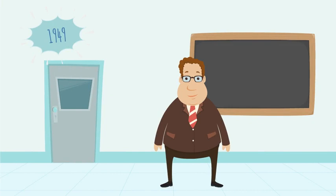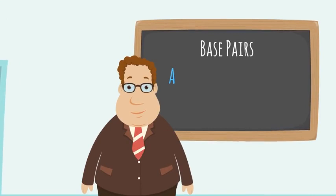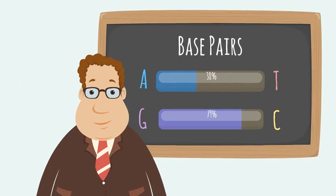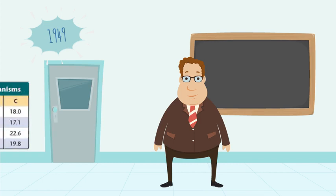In 1949, Erwin Chargaff discovered several properties of DNA, called Chargaff's Rules. The first rule was that in DNA, the amount of base pairs match up. That is, the number of adenine units equals the number of thymine units, and the number of guanine units equals the number of cytosine units. This hinted at the base pair makeup of DNA.